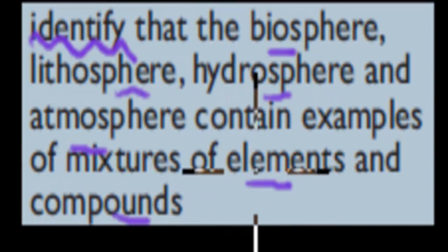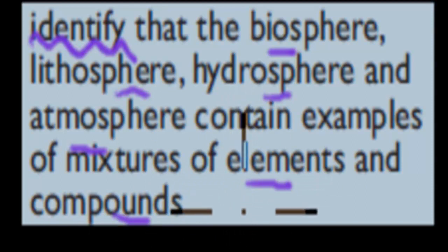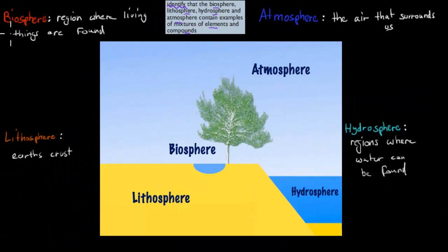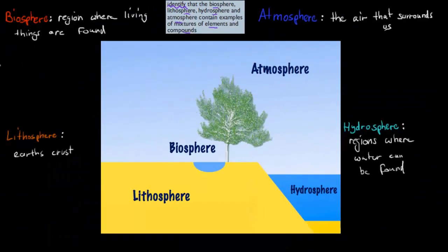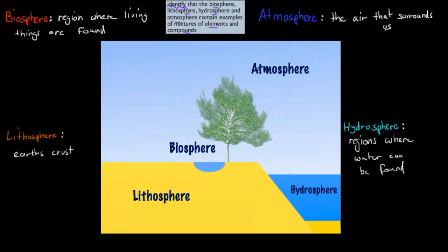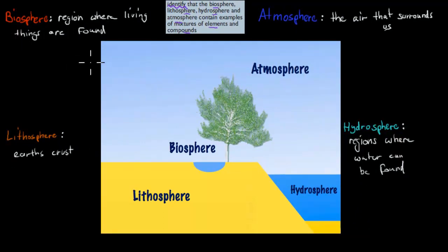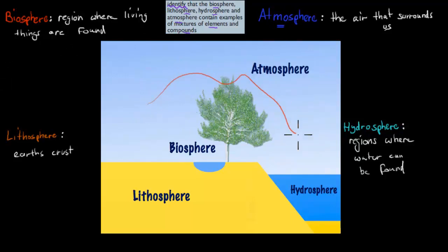So what exactly is the biosphere, lithosphere, hydrosphere, and atmosphere? If you can imagine our place where we live — our Earth itself — we have the air around us, and that is the atmosphere. So anything in this area is considered the atmosphere; the air is mostly the atmosphere.